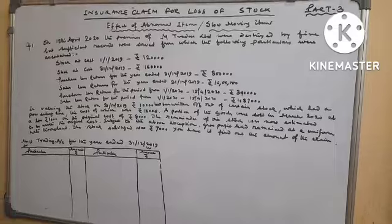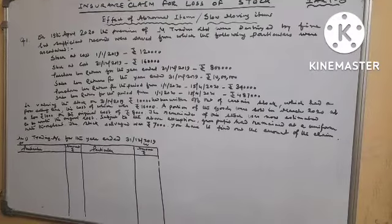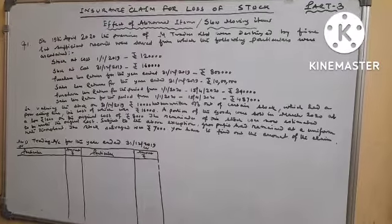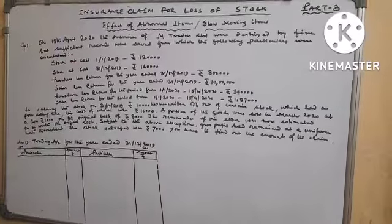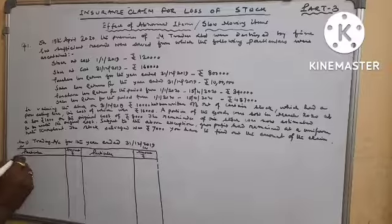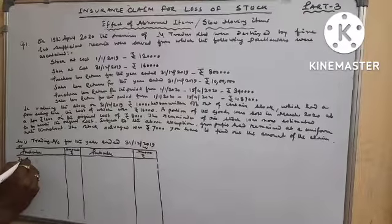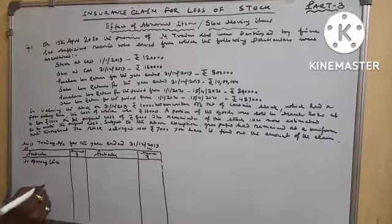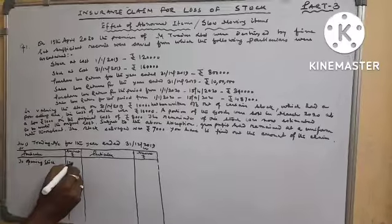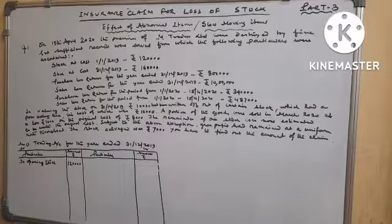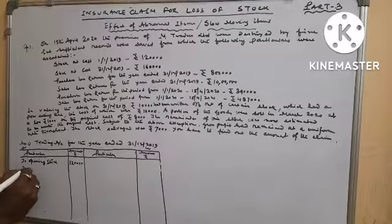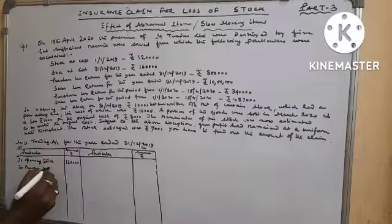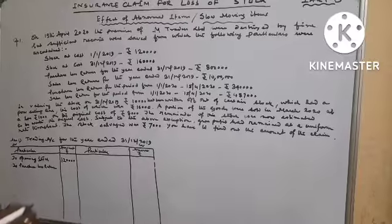First, what to do? We have to prepare trading account for the year ended 31-12-2019 to find out rate of GP on sales. So, what are the data given? Opening stock given, Rs. 120,000. To opening stock, Rs. 120,000. To purchase less return.